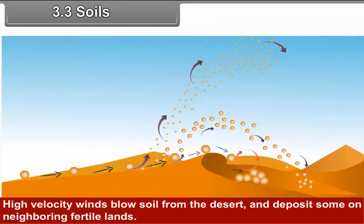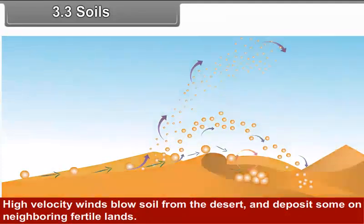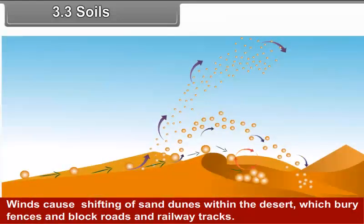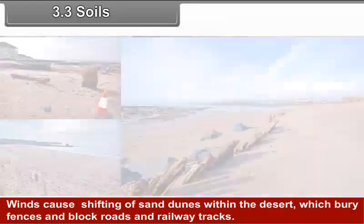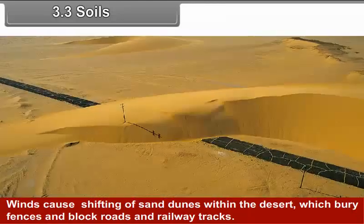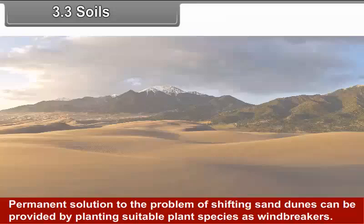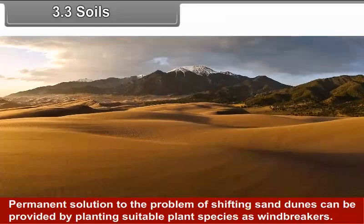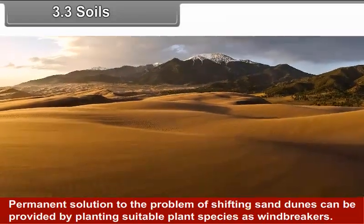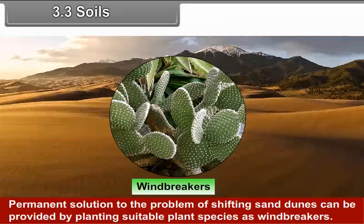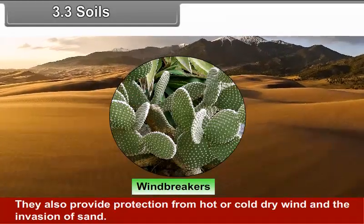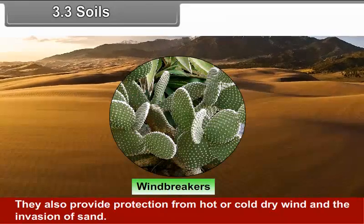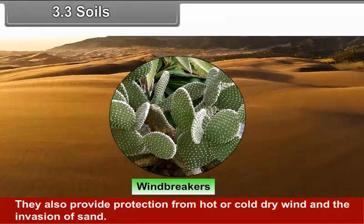The soil of the Rajasthan desert is prone to wind erosion. High-velocity winds blow soil from the desert and deposit some on neighboring fertile lands. Winds cause shifting of sand dunes within the desert, which bury fences and block roads and railway tracks. Permanent solutions can be provided by planting suitable plant species as windbreakers, which also provide protection from hot or cold dry winds and the invasion of sand.